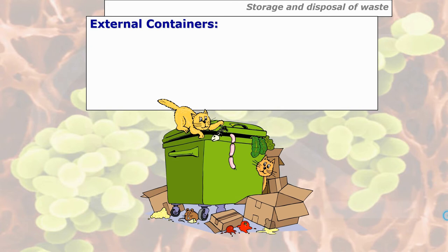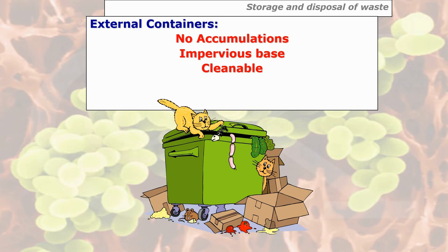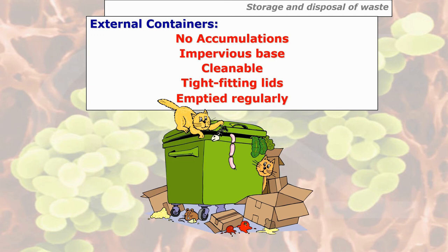With outside bins, there should be no accumulations — as shown in this diagram where boxes and food material left outside will attract pests. They must be held on an impervious base such as concrete, tarmac or patio tiles, certainly not on soil or grass because that's where pests hide. They must be cleanable and preferably disinfectable — during summer disinfected once a week with a power wash, during winter perhaps once a month. They need tight-fitted lids so pests can't gain access, and emptied regularly by your local council or contractor.